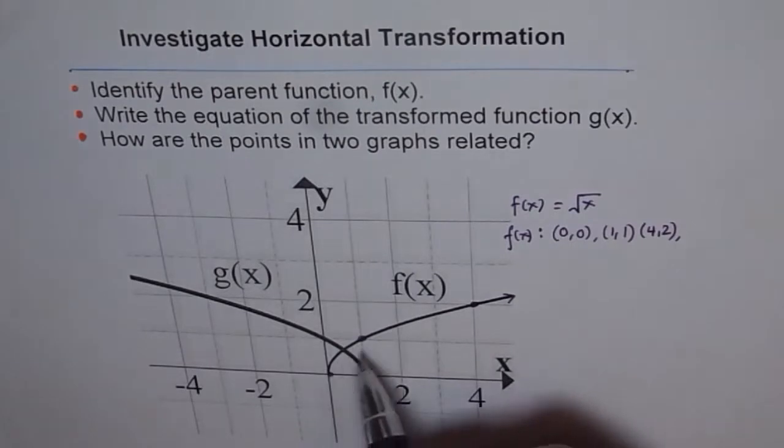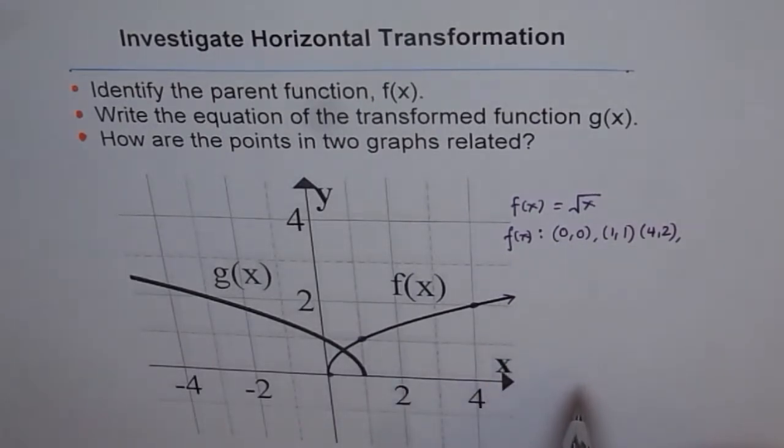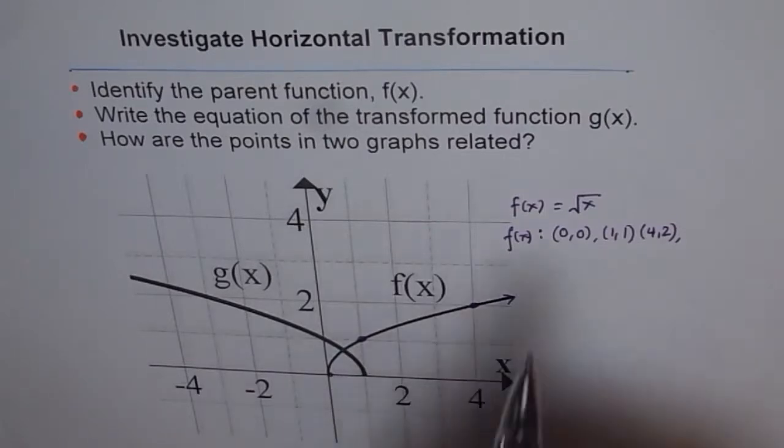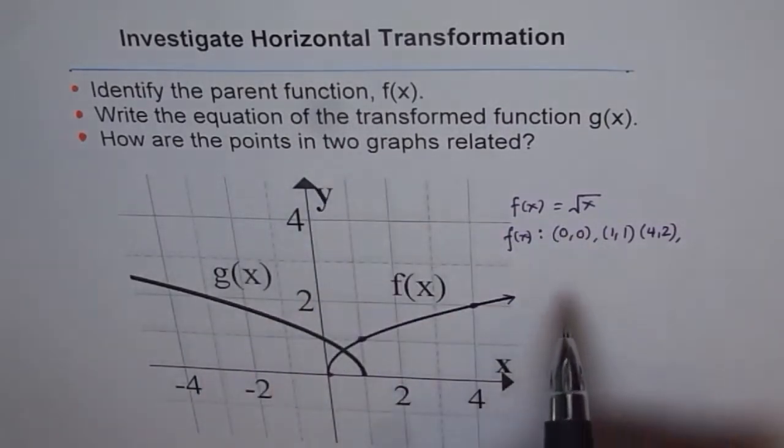So we can say this function f(x) is actually equals to square root of x. Now, that is because based on the graph of the function and with the points, you can always check it works. So the parent function is square root of x. That is the first answer.